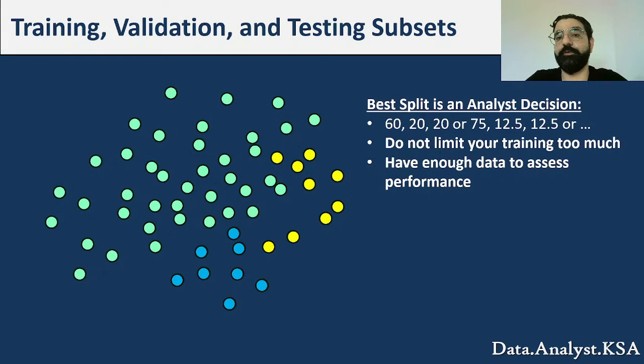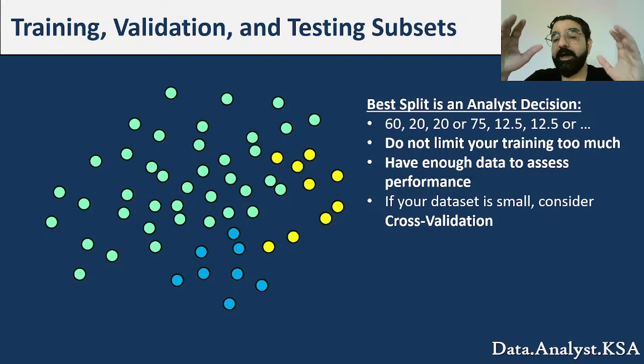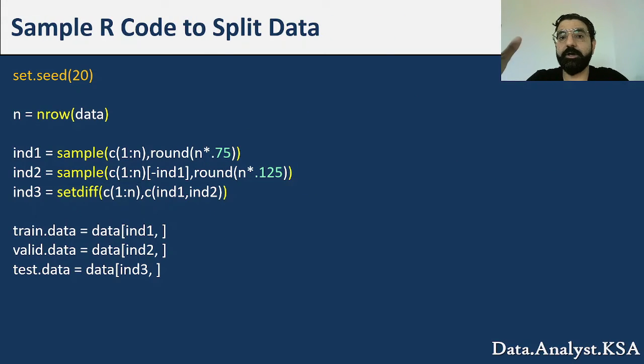Now if your dataset is too small, you might have to use something called cross-validation because you cannot afford to split it into three sets. So you will split it into two sets, a training and the testing, and within the training set you will take some samples out to do cross-validation. And you can check the cross-validation video for more details.